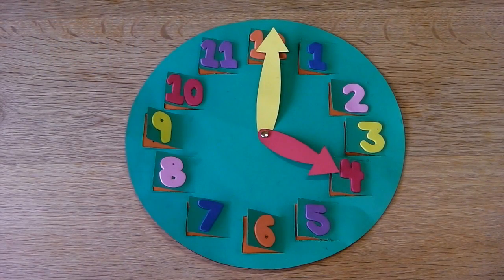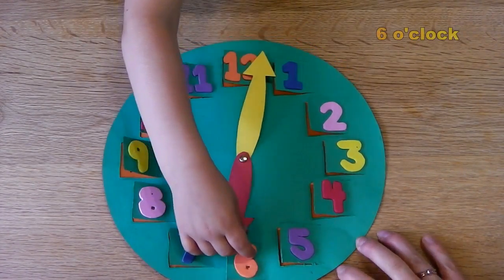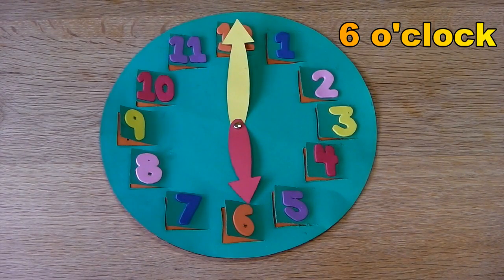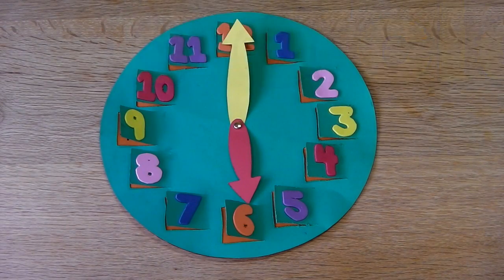So Dougie, what do you think 6 o'clock would look like? It would look like 6. Now they are both pointing down and up. Which one is the minute hand pointing to? 12. To the top, because that means o'clock. And where is the hour hand pointing? 6. 6 for 6 o'clock!